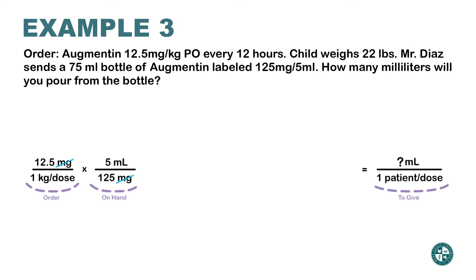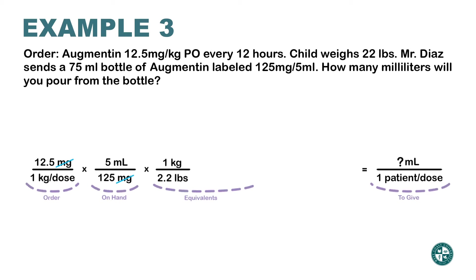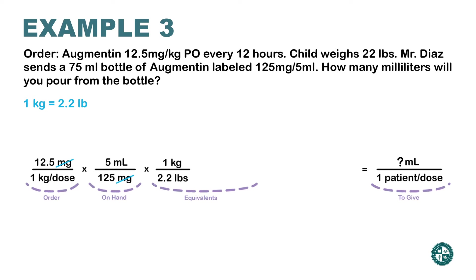However, there's a problem. The dose is 12.5 mg for every kilogram the dog weighs, but the dog is 22 pounds. I need more information. I want to cancel out the word kilogram, so I'm going to use the conversion that one kilogram is equivalent to 2.2 pounds.